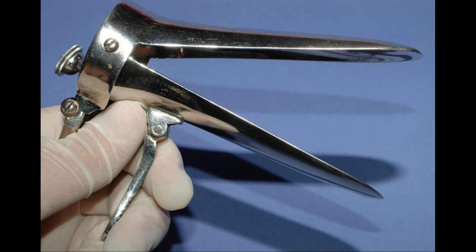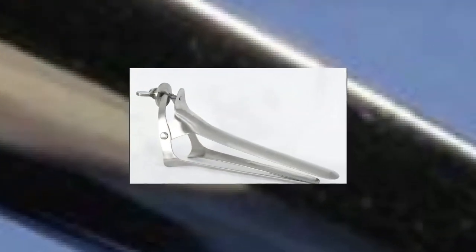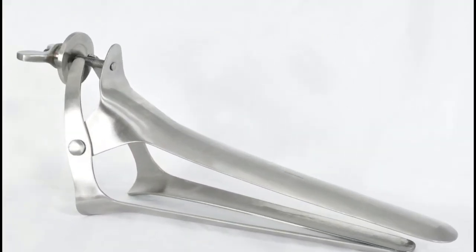The device is inserted with the blades closed. The blades are then parted by means of a manual screw. As the blades move farther apart, they create the space through which the doctor can assess the inside of the vagina.